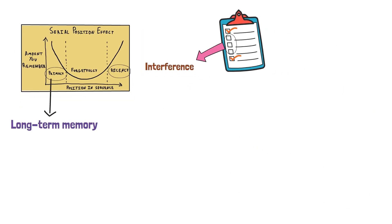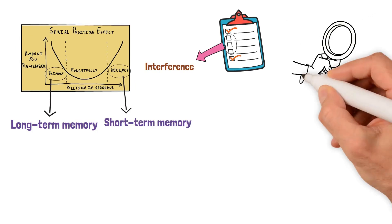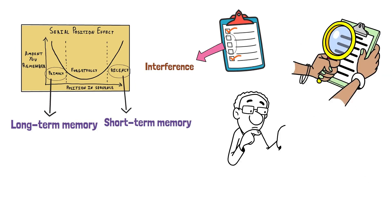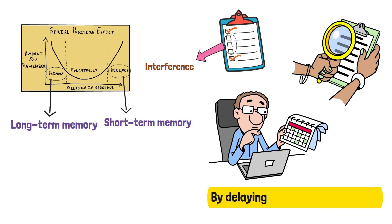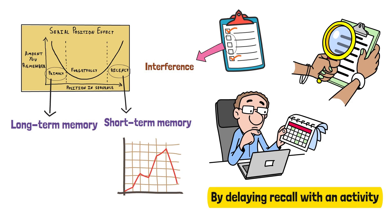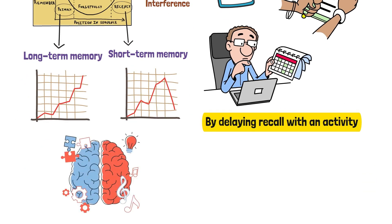While Primacy relies on long-term memory processes, Recency is connected to short-term memory. Studies suggest that by disrupting the short-term memory, that is, by delaying recall with an activity, the Recency effect diminishes, while the Primacy effect remains relatively intact. This highlights the different cognitive mechanisms at work in each effect.